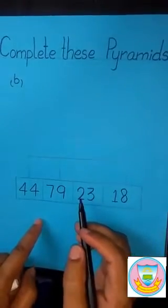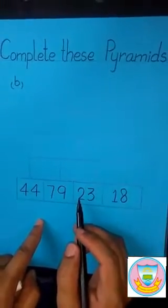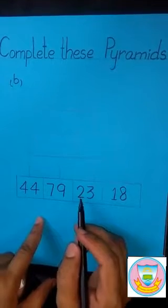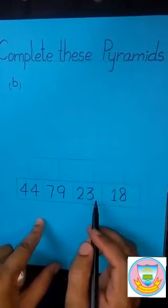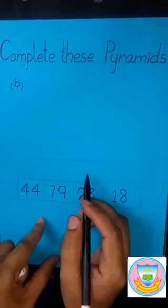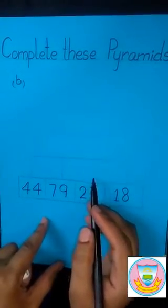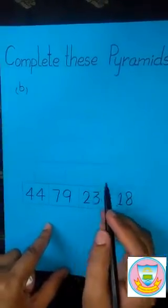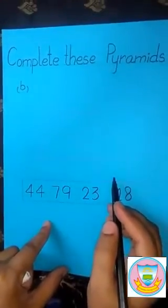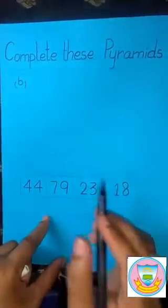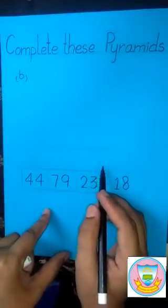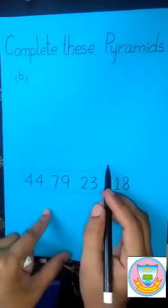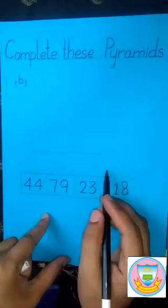Okay students, this is our question. This is a pyramid. This pyramid has 4 rows. The 4th row of this pyramid is filled. Now we fill the next 3 rows. Now let's start to solve the question. We solve the 3rd row of this pyramid. In the 3rd row, there are 3 blank boxes. Now we fill the blank boxes with the right digit.